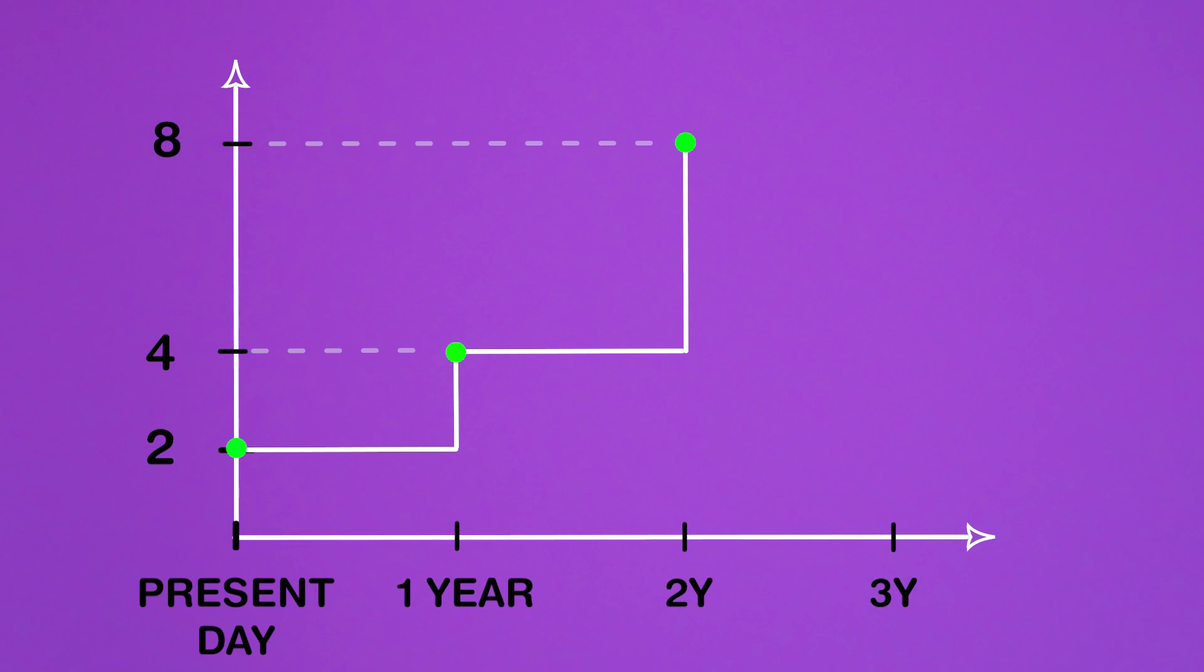At the starting point, the amount is 2 raised to 1 or simply 2. After completion of subsequent time periods, it goes on like this, 2 raised to 2, 2 raised to 3, and so on.